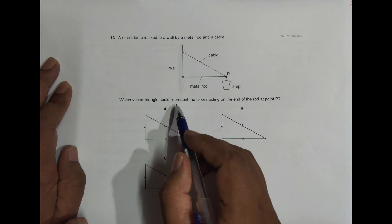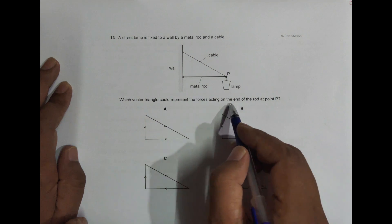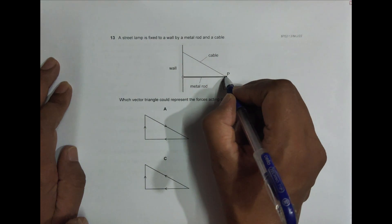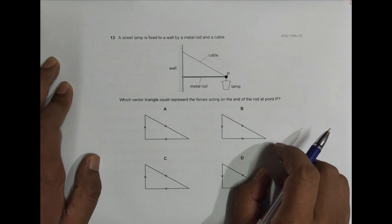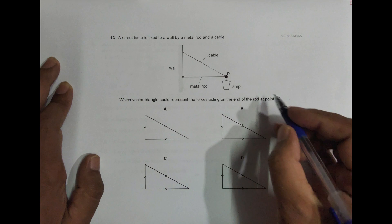Which vector triangle could represent the forces acting on the end of the rod? So this is the end of the rod at point A, so we have to find which vector triangle represents the forces acting here.